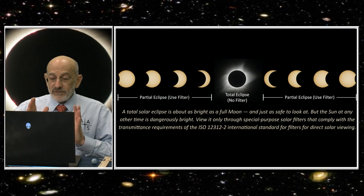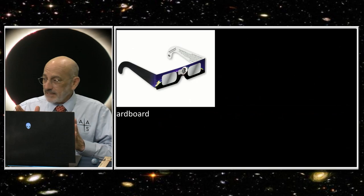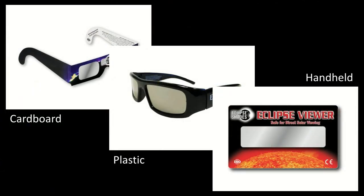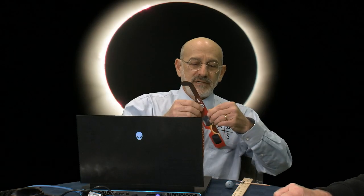But at any other time during the partial phases before and after totality, or if you're not in the path throughout the partial eclipse, you have to look through safe solar viewers. If you go to the next slide, I show some pictures. I actually brought some samples. These cardboard solar viewers are very popular, very inexpensive.